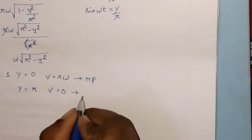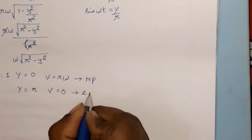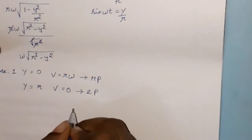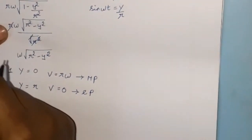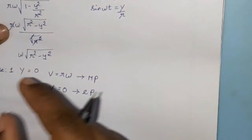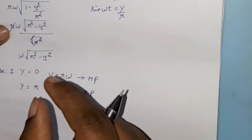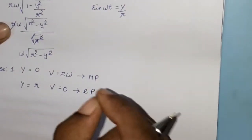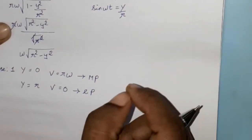The rest position is the mean position, also called the equilibrium position. When the body is in extreme position, the velocity is zero, while at the mean position the velocity is maximum equal to r omega.